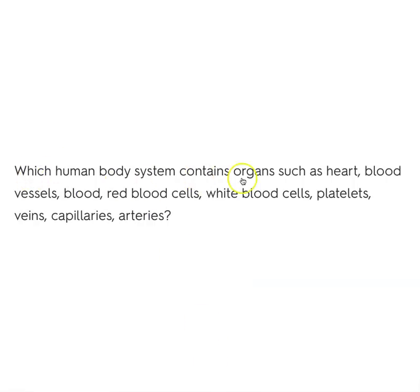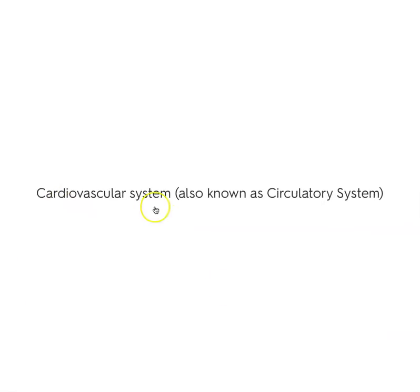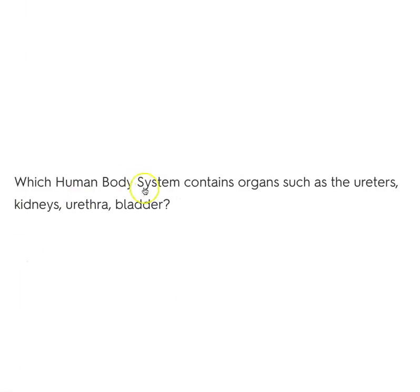Which human body system contains organs such as the heart, blood vessels, blood, red blood cells, white blood cells, platelets, veins, capillaries, and arteries? The cardiovascular system, also known as the circulatory system. Which human body system contains organs such as the ureters, kidneys, urethra, and bladder and removes urine? The urinary system.